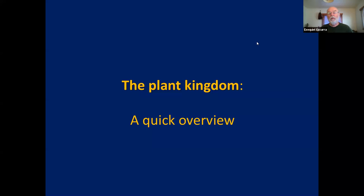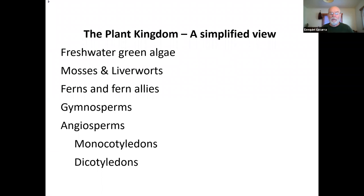We're going to start this class with a quick overview of the plant kingdom. Any plant that you see on land — underwater in the ocean is a different story, we won't be touching that in this course, because of the diversity of algae. But on land, you will basically see the following groups of plants. You might see in rivers, waterways, and ditches freshwater green algae, which are basically algae like the ones in the ocean that grow in freshwater.